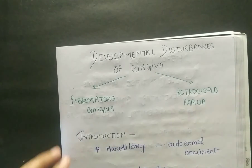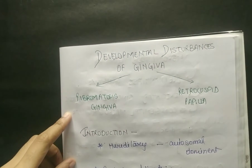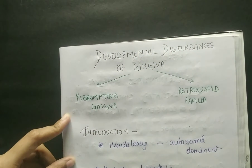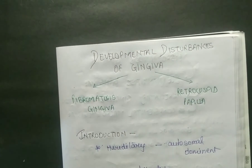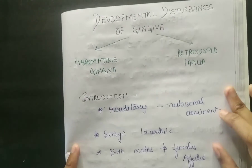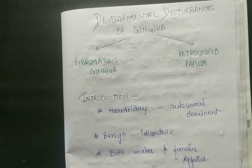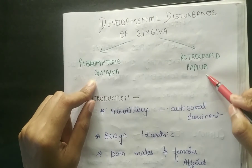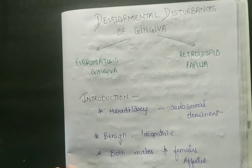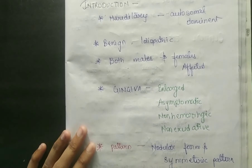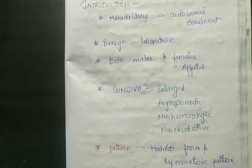Hello everyone, welcome to SAM — that is Study Art Motivation and Education. In this video we are going to discuss the developmental disturbances of gingiva. We have two parts: fibromatosis gingiva and retrocuspid papilla. Now coming to the introduction part of developmental disturbances of gingiva.